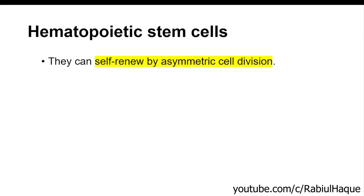Now let's talk about hematopoietic stem cells. They can self-renew by asymmetric cell division. This means from one cell we get two daughter cells that will have different fates. One daughter cell will be exactly like the original hematopoietic stem cell — that is the self-renewed cell. However, the other daughter cell will have a different fate: it will go into the differentiation pathway to give rise to some mature cells. That is known as asymmetric cell division — from one cell we get two daughter cells, but they will have different fates.